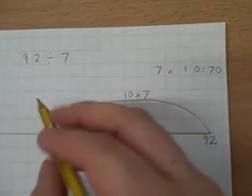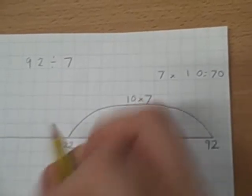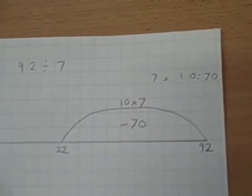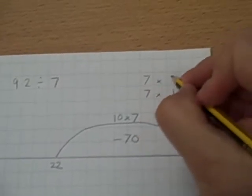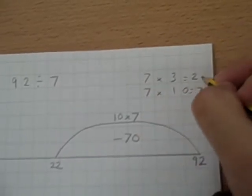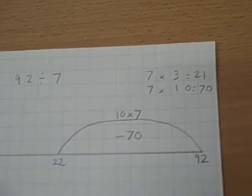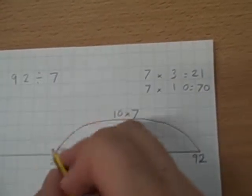That leaves us with 22. And because I'm more confident with my times tables now, I also know that 7 times 3 equals 21. So I can take away 3 chunks of 7.